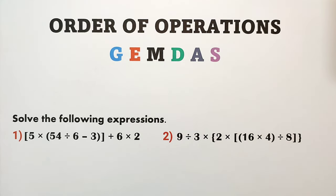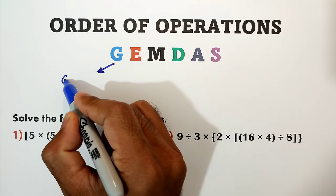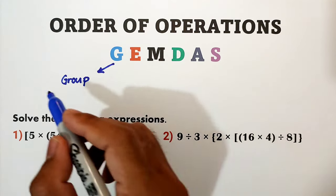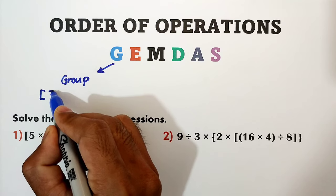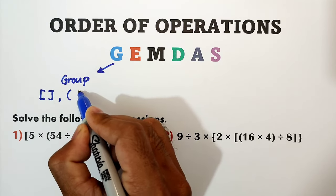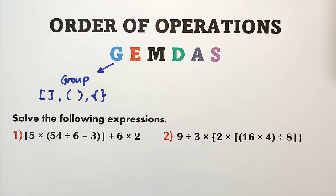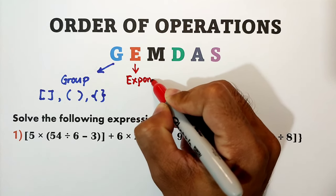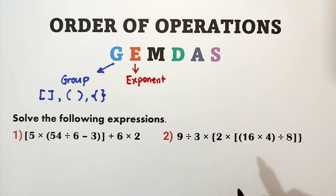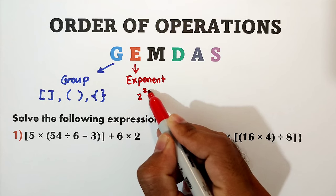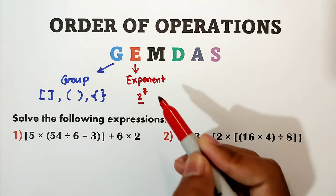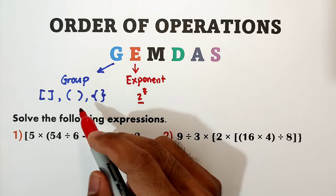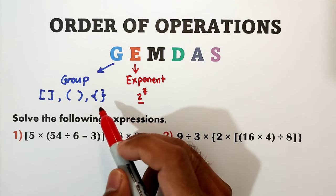GEMDAS stands for G — Group — those are numbers enclosed by bracket, parenthesis, or braces. E stands for exponent, for example two squared. So next after group is exponent. You have to solve that expression second to a number enclosed by parentheses, bracket, or braces.